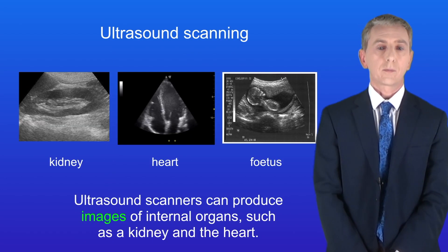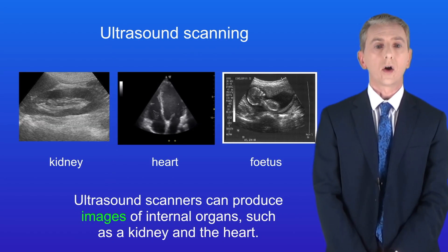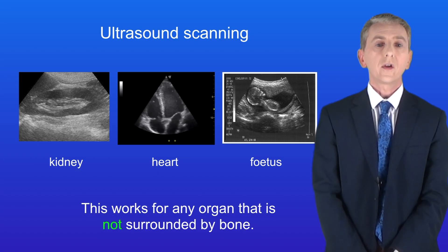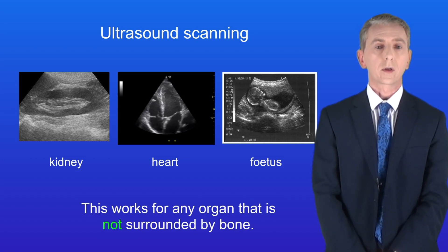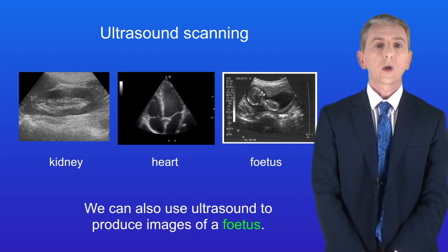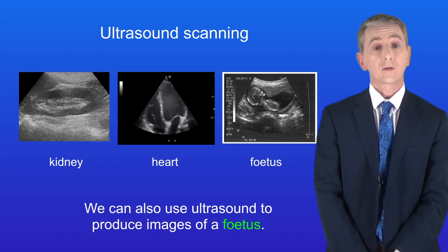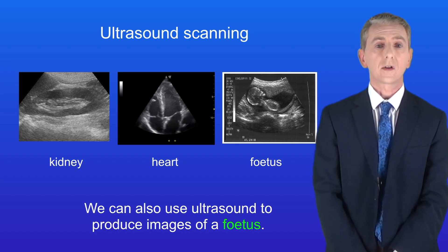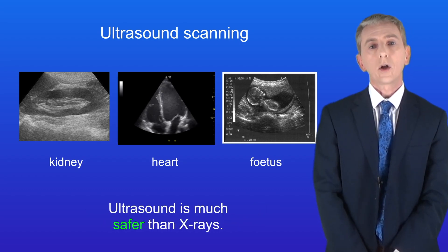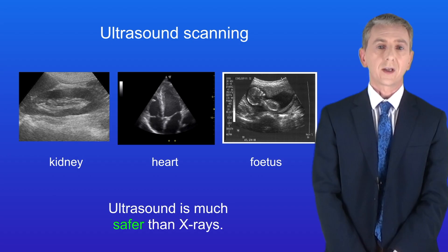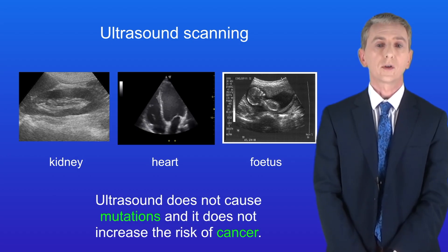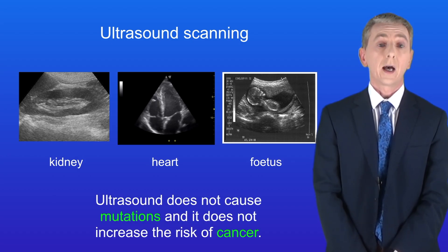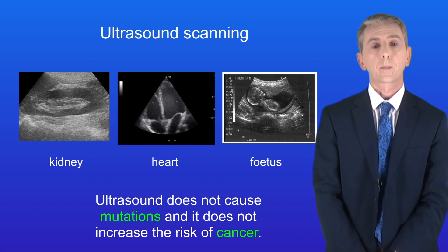Ultrasound scanners can produce images of internal organs such as a kidney and the heart. This works for any organ that's not surrounded by bone. We can also use ultrasound to produce images of a fetus. Ultrasound is much safer than x-rays because it does not cause mutations and does not increase the risk of cancer.